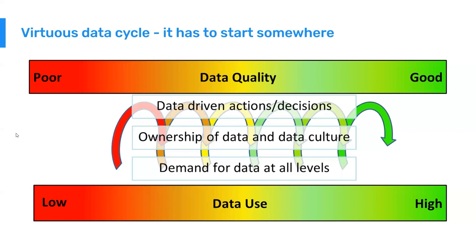As we start to improve data quality, people will inherently start to use the data more. The starting point for most countries is to work on improving data quality, because we cannot have high data use if we have poor data quality. We have to make sure data quality reaches a level where people start to trust the data. As we work on data quality, we often see that data use also naturally increases. You can't have a high one without the other.